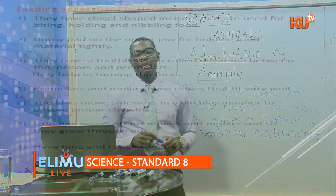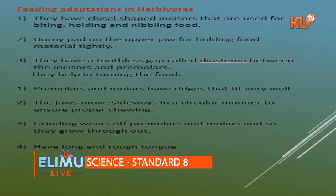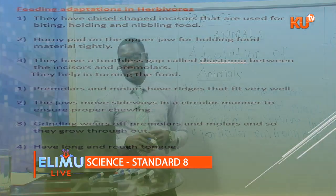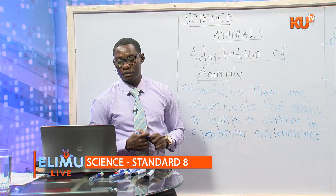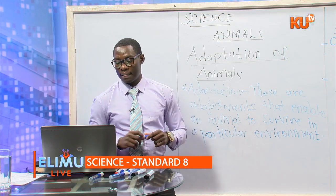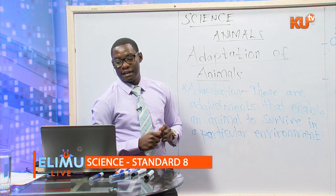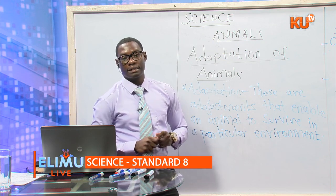Another adaptation is the diastema. A diastema is a toothless gap found before the premolars — a region on the lower jaw with no teeth. The purpose of the diastema is to turn the food when the animal is chewing, so that it can be properly chewed.